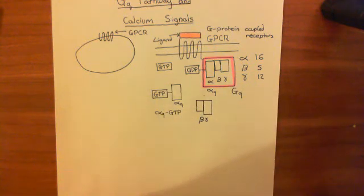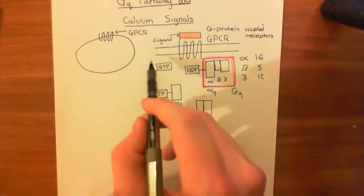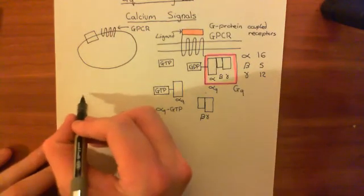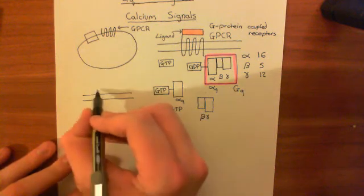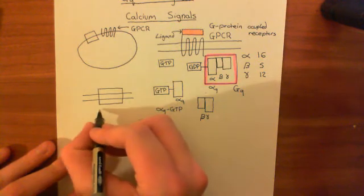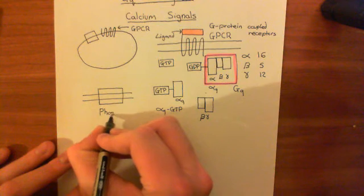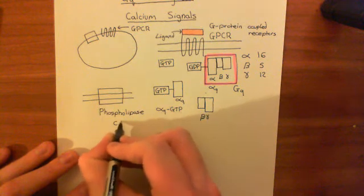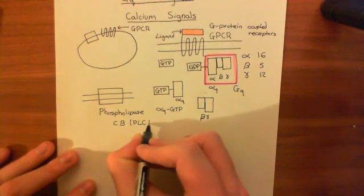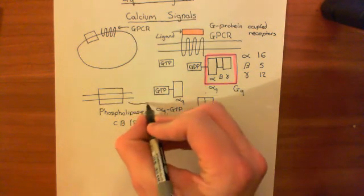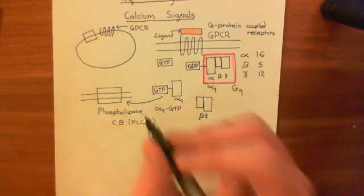Alpha-Q GTP is going to go and activate another enzyme in the phospholipid bilayer of the cell. This enzyme is known as phospholipase C, and specifically the form that the alpha-Q GTP subunit activates is phospholipase C beta, or PLC-beta for short. Often people just say phospholipase C, but the specific type activated by alpha-Q GTP is phospholipase C beta.